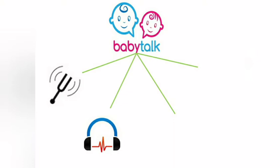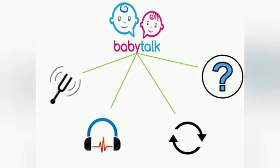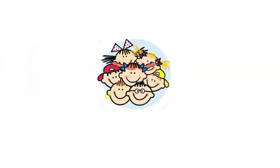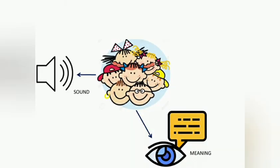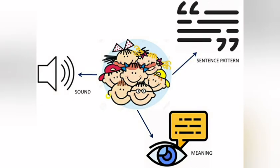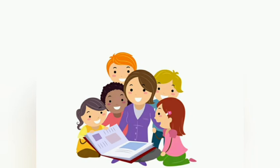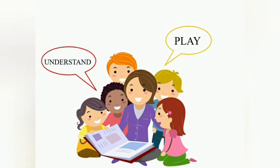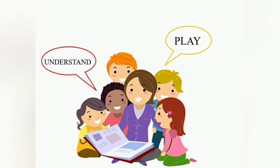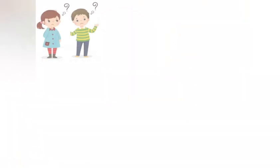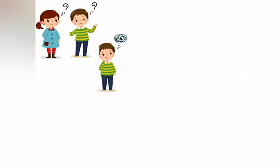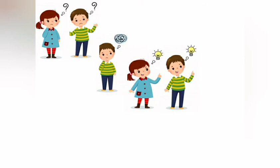Baby talk uses exaggerated intonation and sounds, along with lots of repetition and questions. All these features help children to understand the meaning, sounds, and sentence patterns of their language. In this way, children can learn how to understand language even when they still cannot talk. It will help them to figure out their ideas and try to communicate or express their ideas using words.